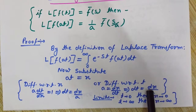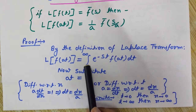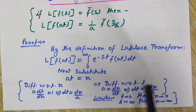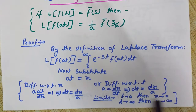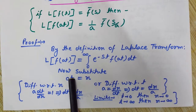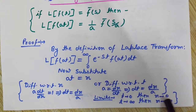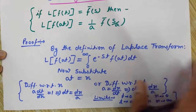Now I will check the limits. Since we have dt, the limits are from t = 0 to t = infinity. I want to change dt to dx, so the limits will be in terms of x. When t = 0, substituting gives x = 0; and when t = infinity, x = a * infinity = infinity. So the limits from 0 to infinity are unchanged in terms of dx.